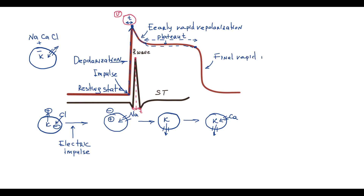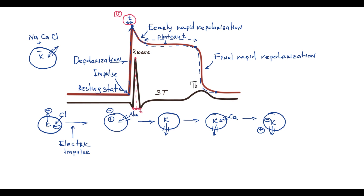The next phase is final rapid repolarization. Calcium channels become inactivated but potassium channels are still open, and this flow of potassium out of the cell restores the positive charge on the outer surface of the cell membrane, returning cellular charges to the resting state. This phase is represented on ECG as the T wave. Compared to the R-wave of depolarization — which has the shortest duration and highest amplitude — the T wave is substantially longer and has a lower amplitude.